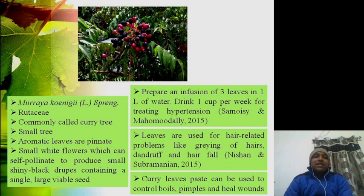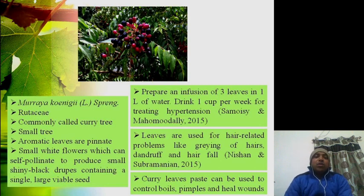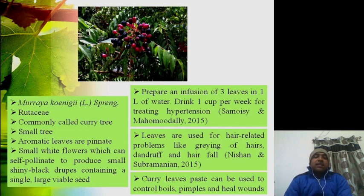This plant is commonly called the curry tree. Its scientific name is Murraya koenigii and it belongs to the Rutaceae family. It is essentially a small tree, and the leaves are aromatic and pinnate in nature. It has a very good fragrance, which is also why people use it as a curry ingredient and it is commonly called the curry tree.